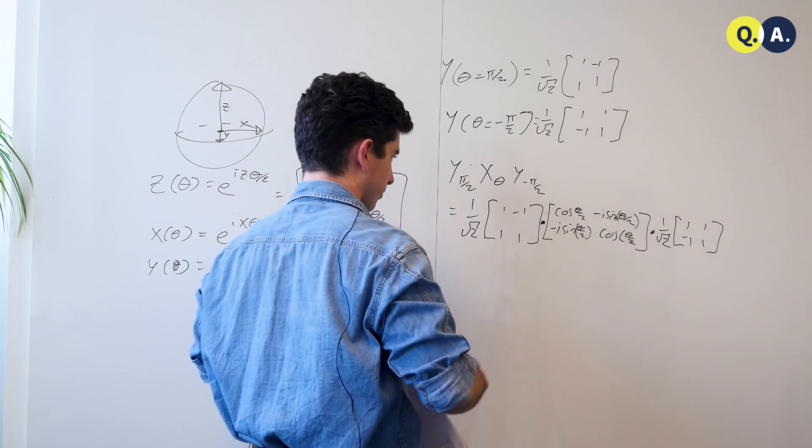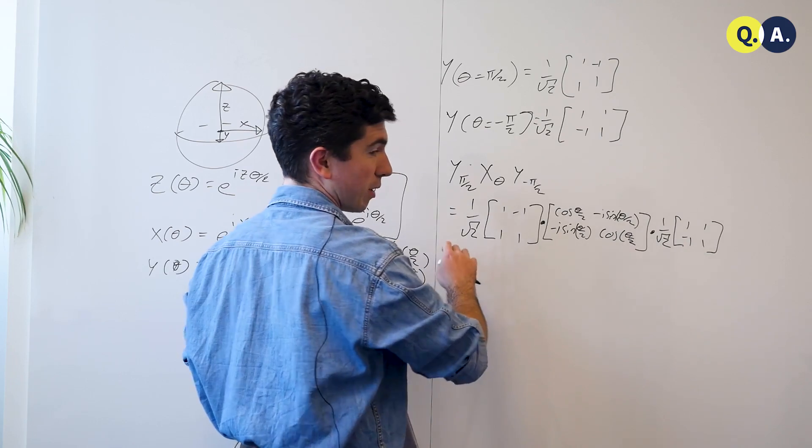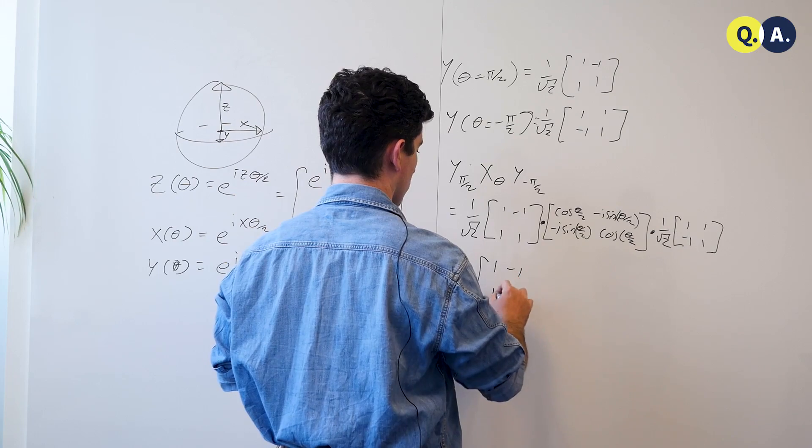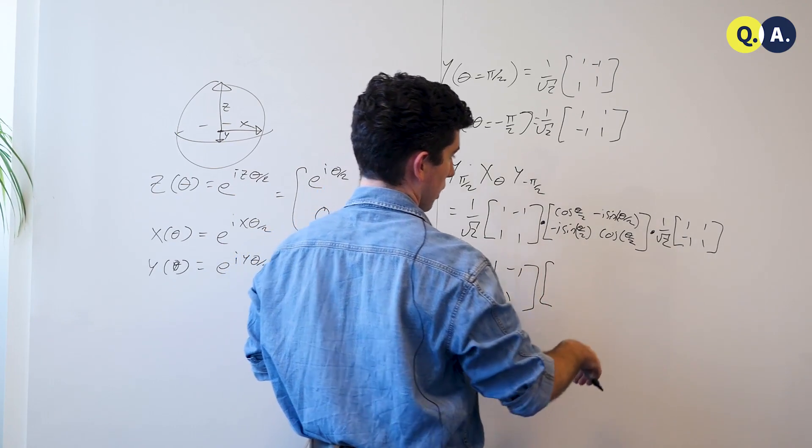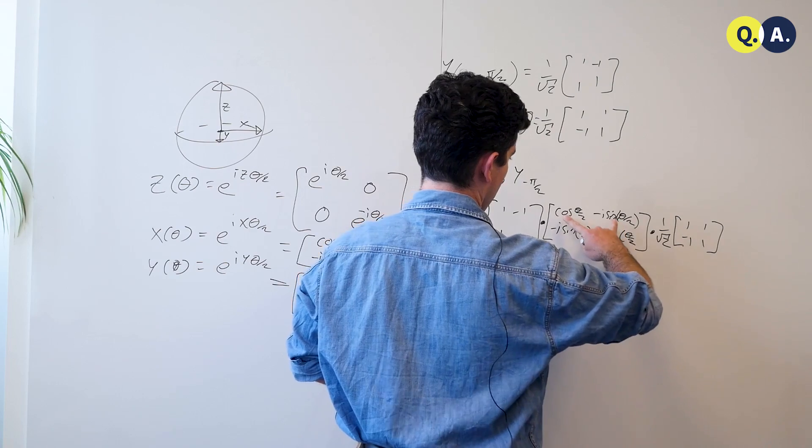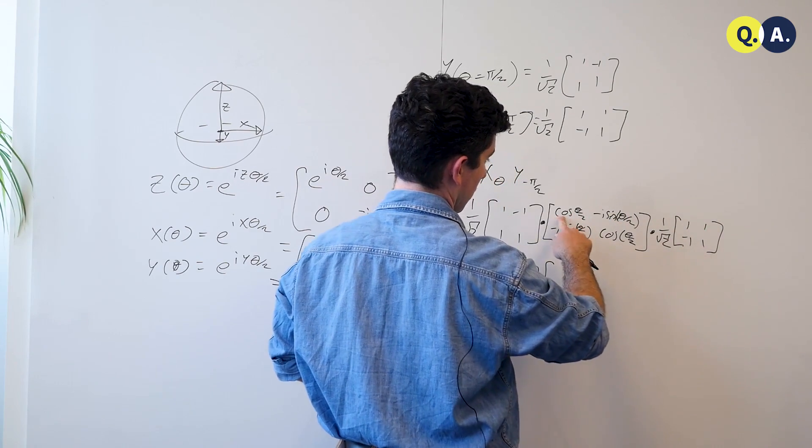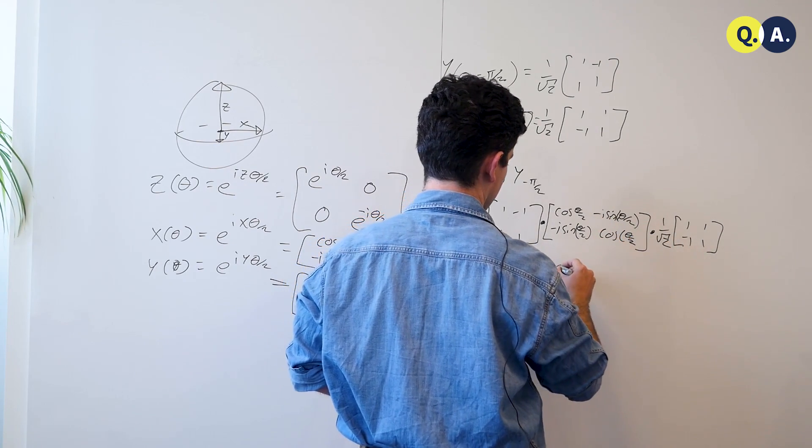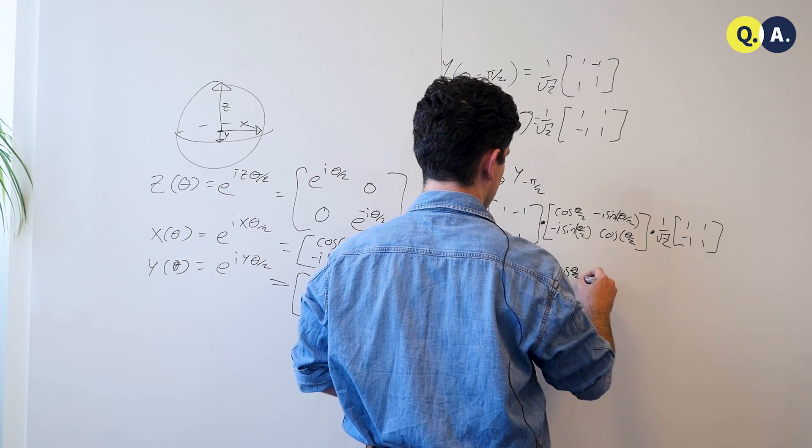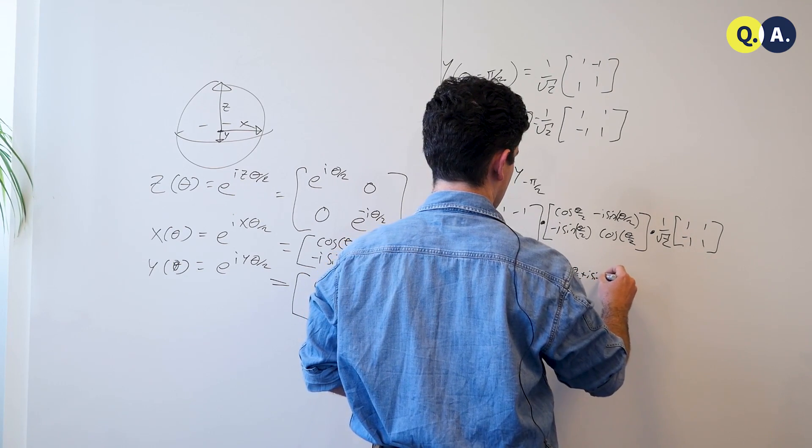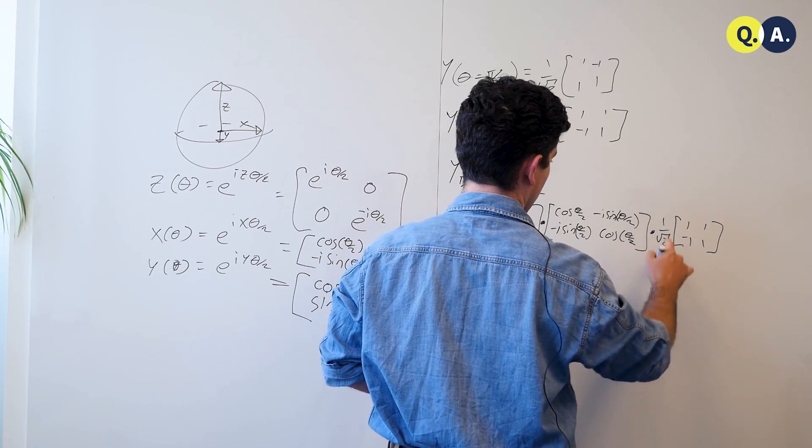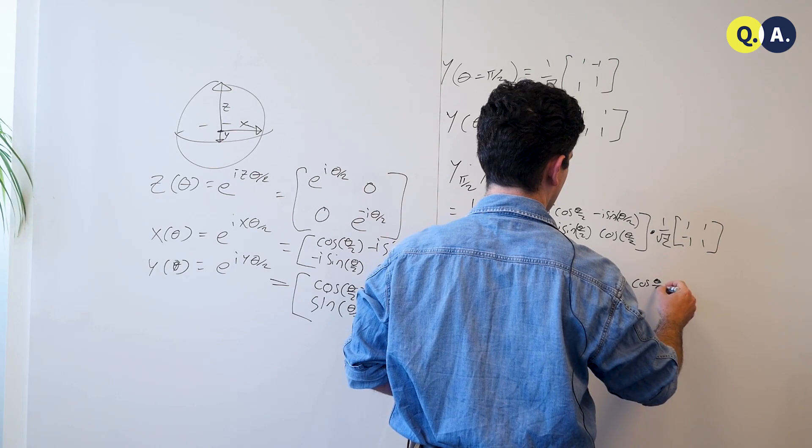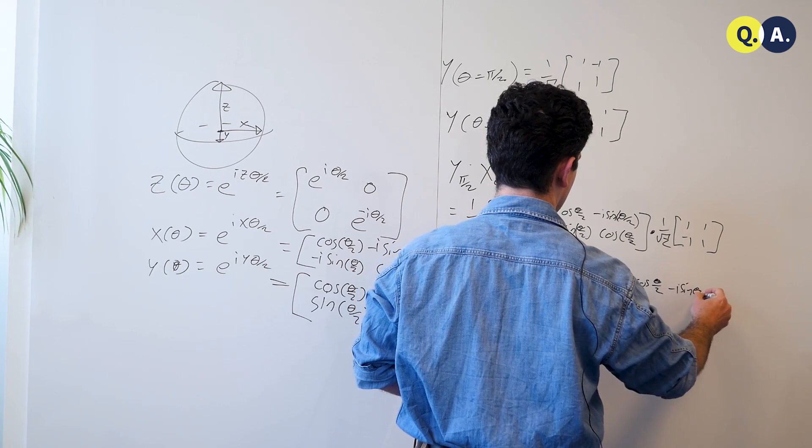We multiply these through. So, first off, I can take these two factors of 1 over square root of 2, make them a factor of a half, [1, -1; 1, 1]. And then if I multiply these here, I get cos(theta/2) plus i*sin(theta/2), because these two minus signs cancel. So, this is cos(theta/2) plus i*sin(theta/2). Here, I'll get cos(theta/2) minus i*sin(theta/2).